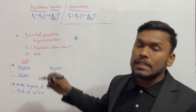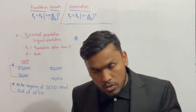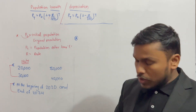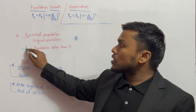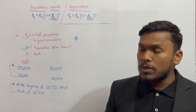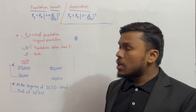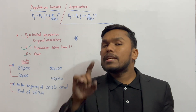P0 means the initial or original population. Pt means the population after t time. R is the rate.